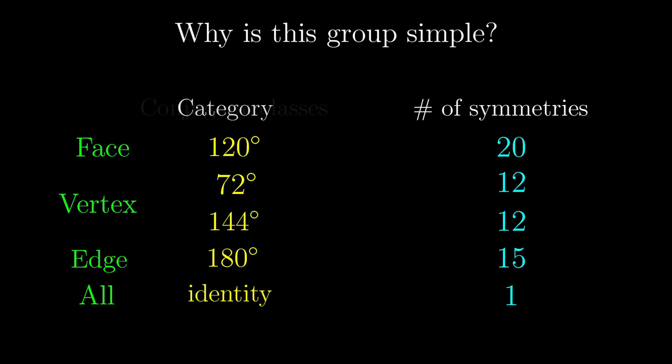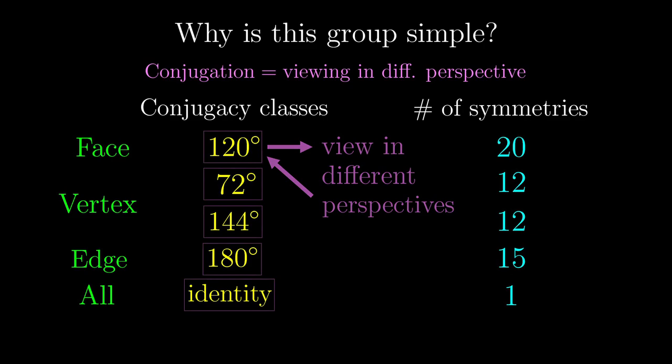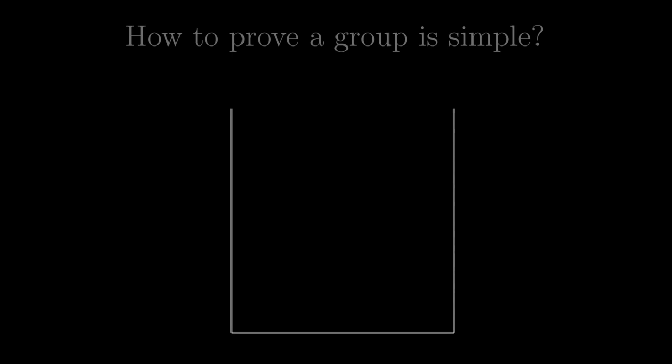These categories have a name, conjugacy classes. This is because conjugation is the more formal name of viewing symmetries in different perspectives. If we pick anything from a conjugacy class, conjugated with any rotations, or equivalently, viewed in different perspectives, it will stay inside the conjugacy class. Another way to think about it, is that everything in a conjugacy class is basically the same thing viewed in different perspectives.